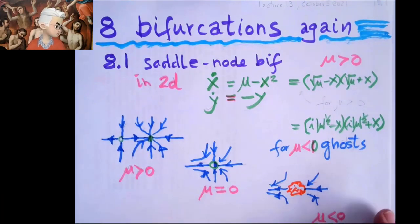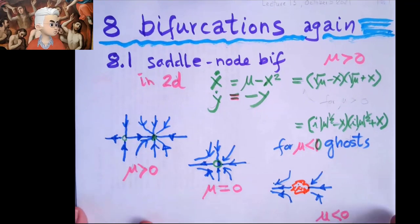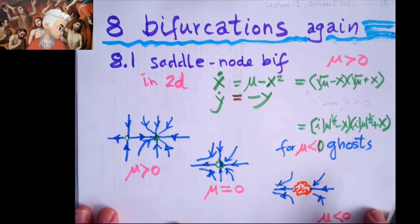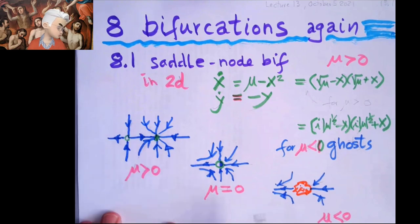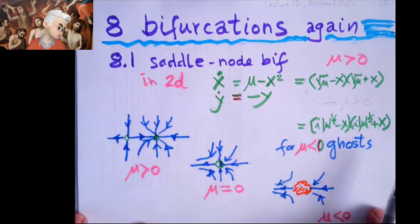And that is just the replay of one-dimensional bifurcation. But you have added the next dimension by making the x-line attractive.